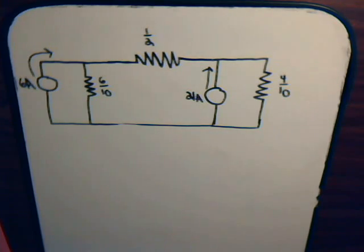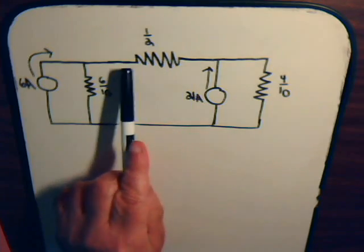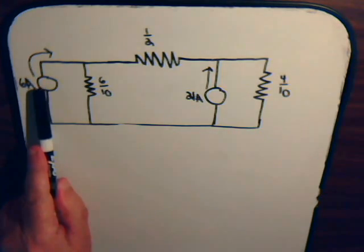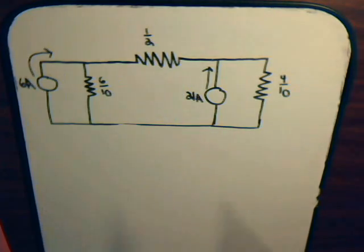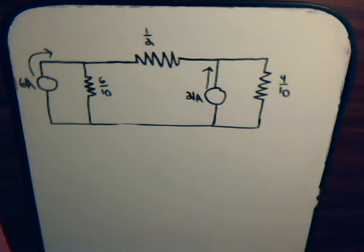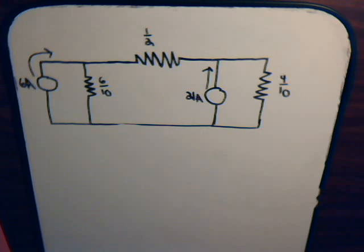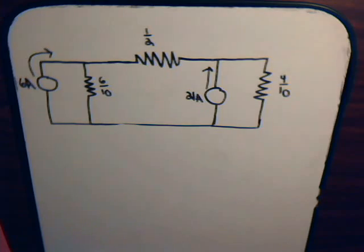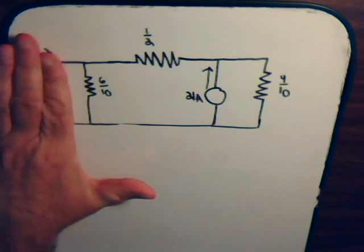We want to determine the voltage drop across this resistor. For part one, we'll eliminate one current source and determine the voltage drop, then eliminate the other current source and determine its voltage drop. At the end, we simply combine the two voltage drops, keeping in mind their proper polarities, to get the net voltage drop due to both current sources.